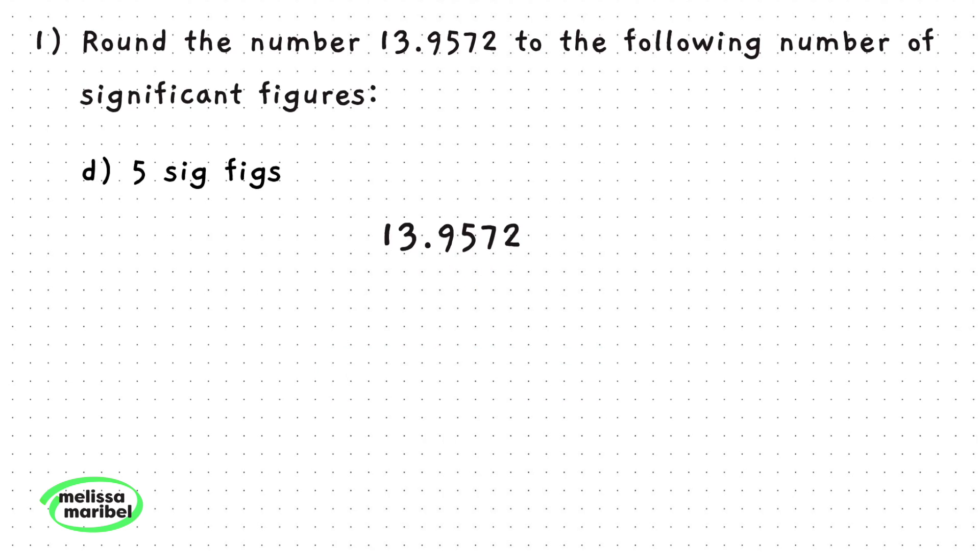And finally Part D wants this number rounded to five significant figures, so we would stop at the 7 and round down, or really just leave the number as is, since the number to the right of 7 is less than 5. Our answer here would be 13.957.